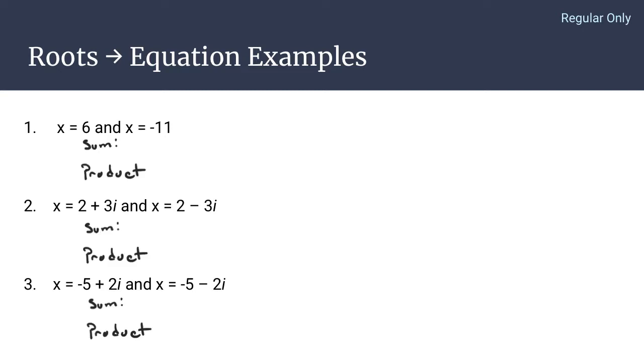Now, the sum for each of these examples is easier because it's fast. The sum of two real roots, 6 plus negative 11, is going to be equal to negative 5.